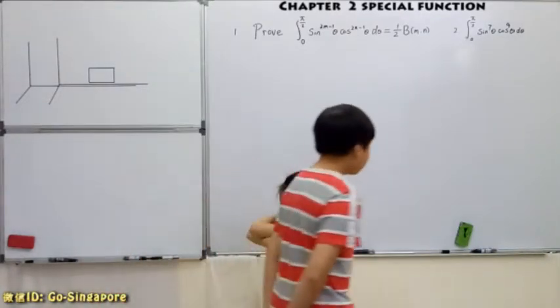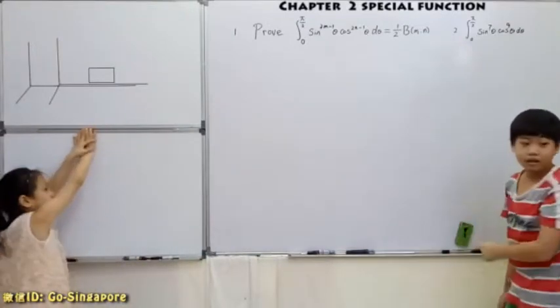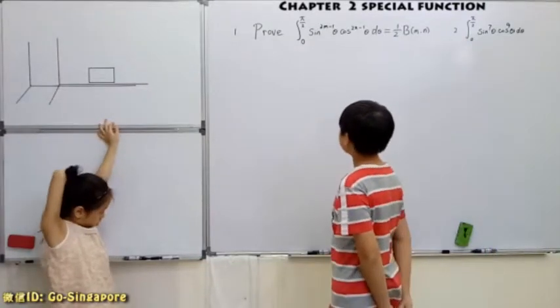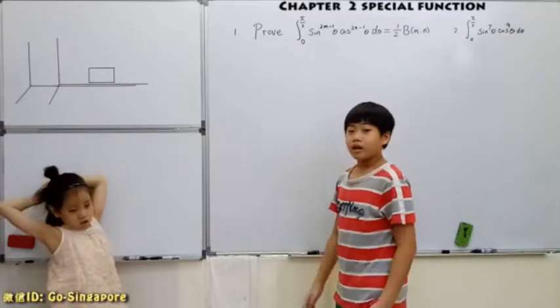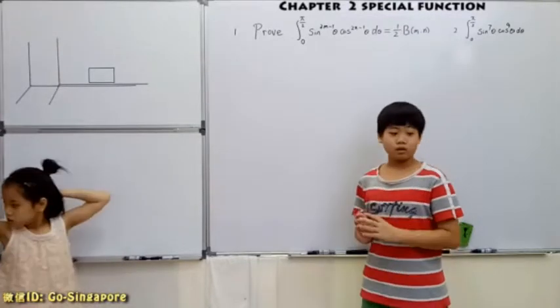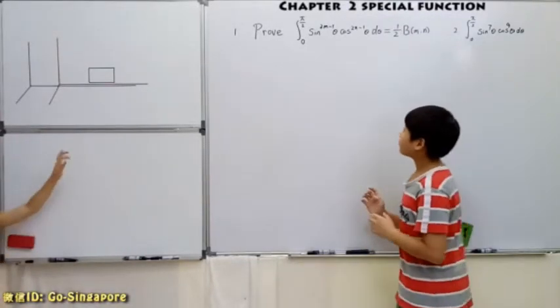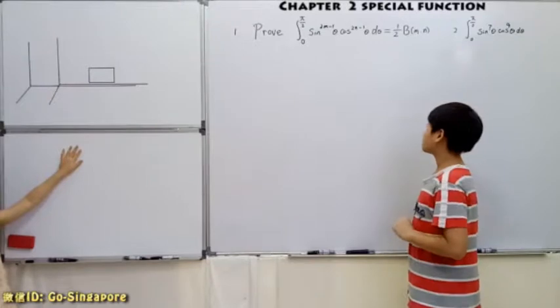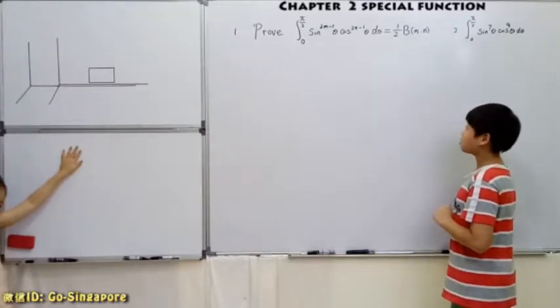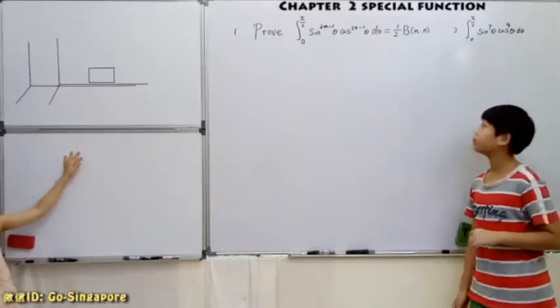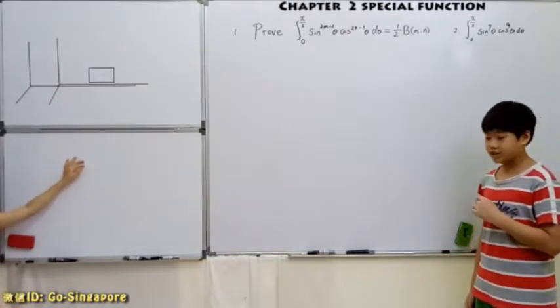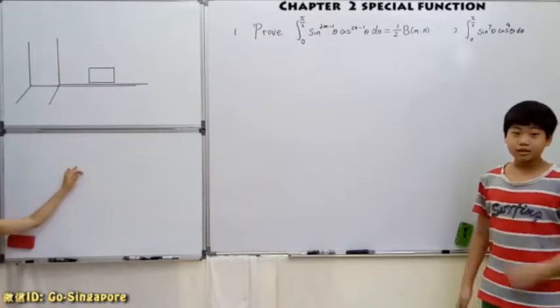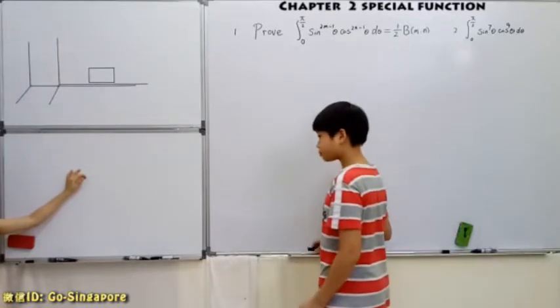So right now, we'll first prove one thing. We'll prove integral from 0 to half pi of sine to the power of 2m minus 1 theta, times cosine to the power of 2n minus 1 theta, d theta. And that is equal to half beta mn.